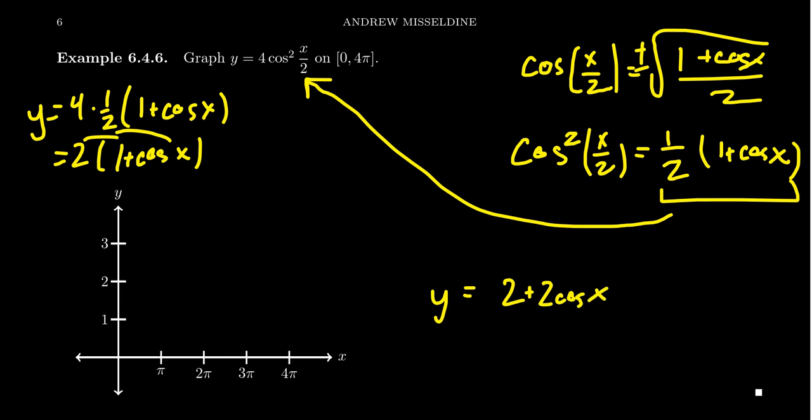We see that in terms of graphing this thing, the period has been changed—or not the period, the amplitude has been changed. The amplitude is going to be 2, and this plus 2 right here means we're going to have a shift up by a factor of 2, so the midline has been moved up by 2.